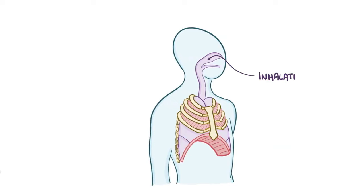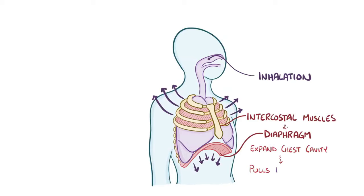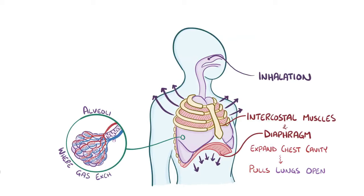During inhalation, both the diaphragm and intercostal muscles located in between your ribs contract to pull the ribs up and out and expand the chest cavity. This creates a tiny vacuum which pulls the lungs open. The air reaches the alveoli, and this is where the majority of gas exchange happens in the lungs.